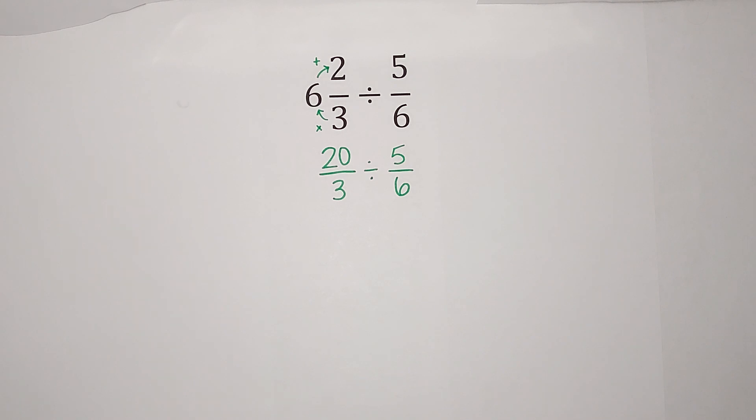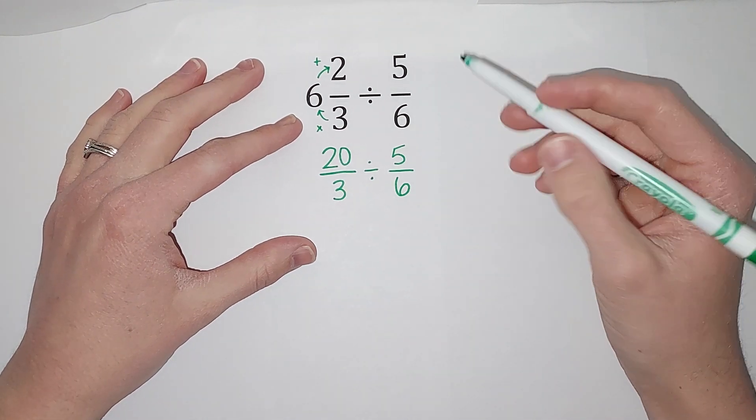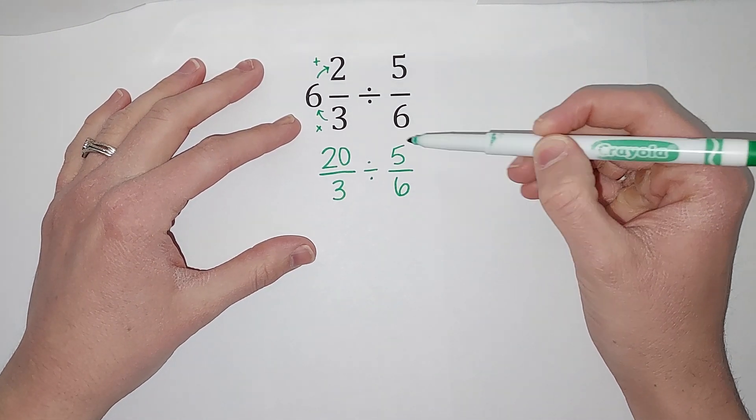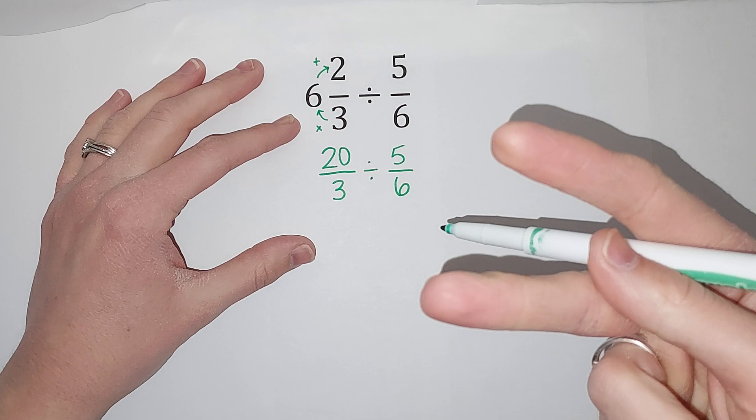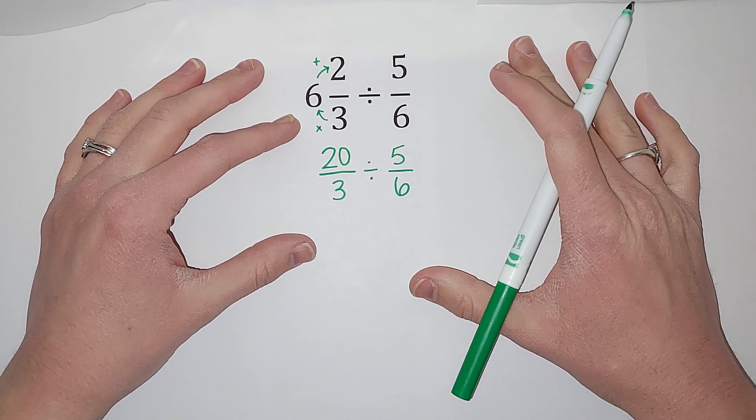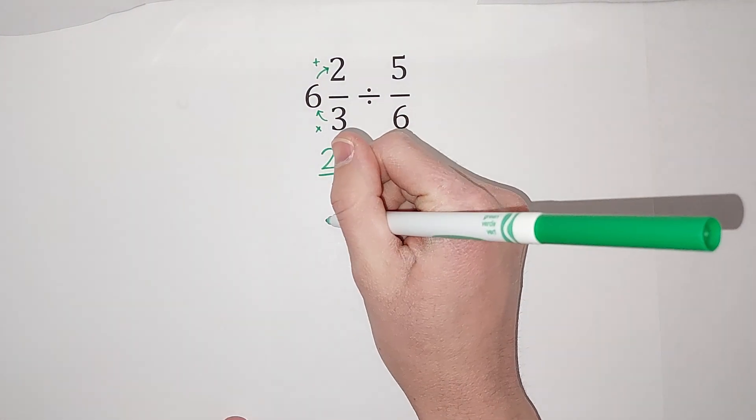All right, so when we divide fractions, we actually take our second fraction and flip it, the fancy math term for that is reciprocal, and then we multiply. What? I know. Let me show you.